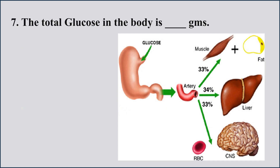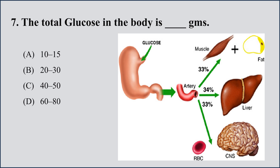Question number 7: The total glucose in the body — how many grams of glucose are present in the body? A) 10–15 g, B) 20–30 g, C) 40–50 g, D) 60–80 g. The right option is B, 20–30 grams of glucose are present inside the human body. The glucose source is food — we take complex carbohydrates from food sources.